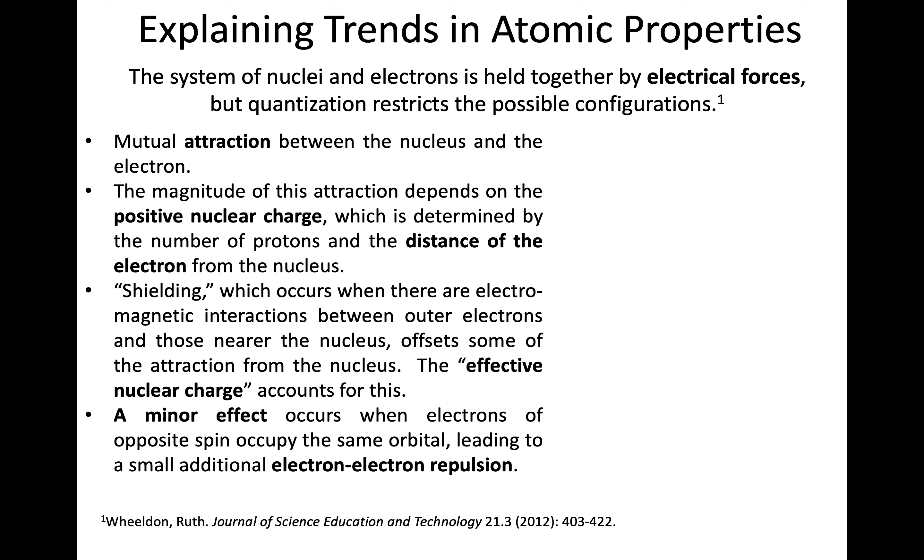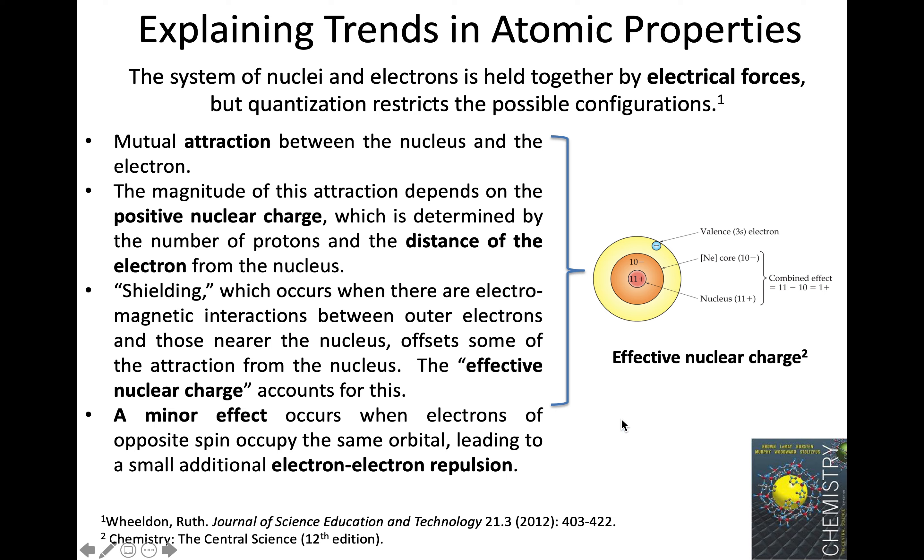When explaining trends in atomic properties, Ruth Wilden's work is a really concise summary of what's going on and how we want to think about it. That system of nuclei and electrons is held together by electric forces, but quantization restricts the possible configurations. We have protons, electrons, attractions and repulsions, but electrons are still found in atomic orbitals. Her description covers the factors I want us to consider, consistent with my textbook's treatment: attractions and repulsions, effective nuclear charge, electron-electron repulsion, and shielding. This is what's used to provide explanations in this chapter.